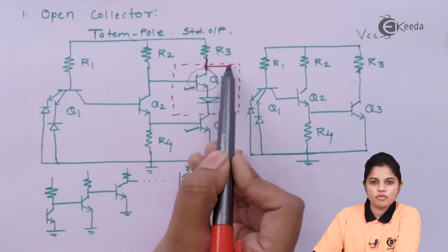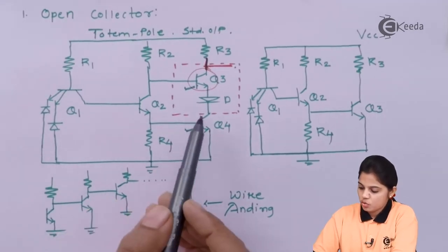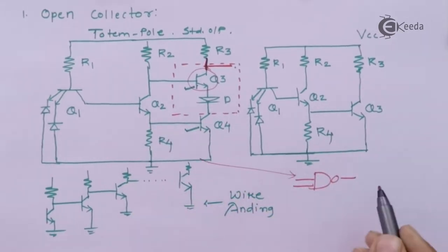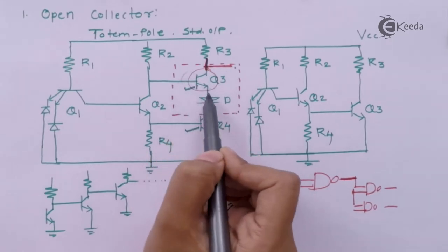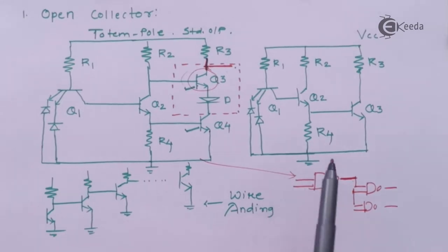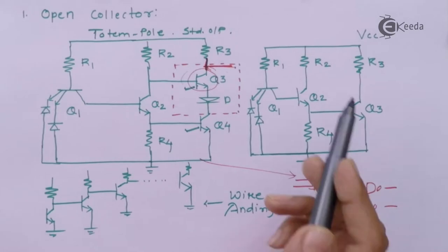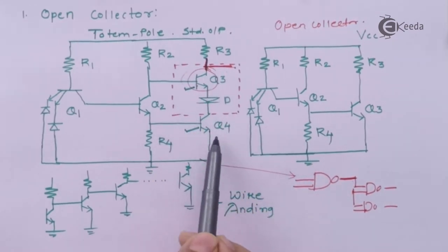The current sourcing by the collector of Q3 is undefined, and if you have an undefined current you cannot connect a number of NAND gates together. If it is undefined you cannot decide how many gates can be driven by the output of this NAND gate. So Q3 is removed along with the diode — if you remove that whole block, your configuration will look like the open collector diagram.